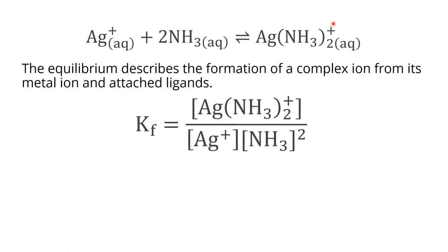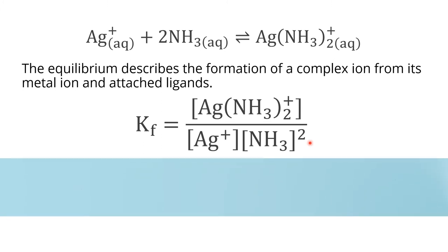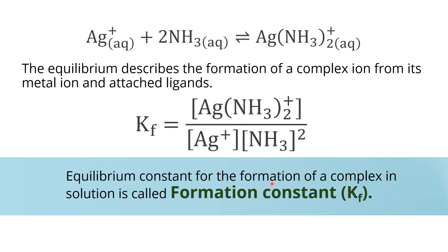As for any equilibrium, this one describes the formation of a complex ion from its metal ion and attached ligands. Remember that a complex consists of a metal ion and ligands, which can be molecules or ions that have at least one lone pair of electrons. We can derive the equilibrium constant K, represented here by Kf, which is a ratio of the concentration of the product divided by the concentration of the reactants raised to their stoichiometric coefficients. This equilibrium constant for complex formation in solution is called the formation constant.